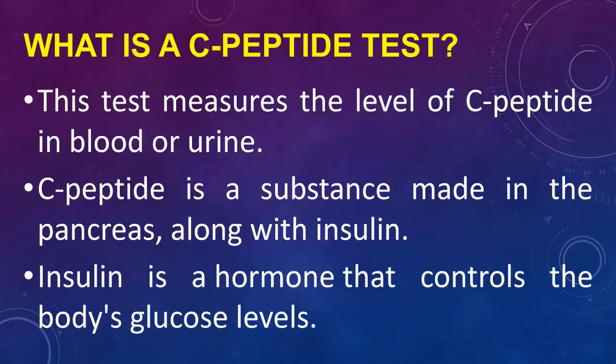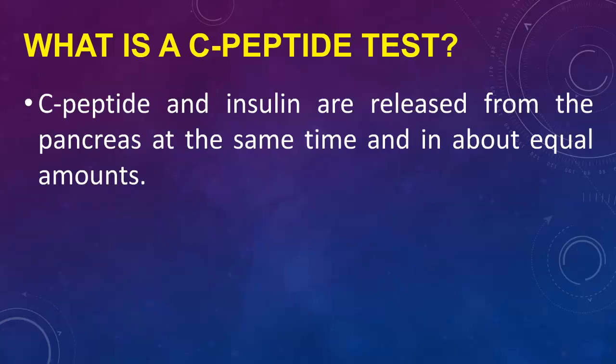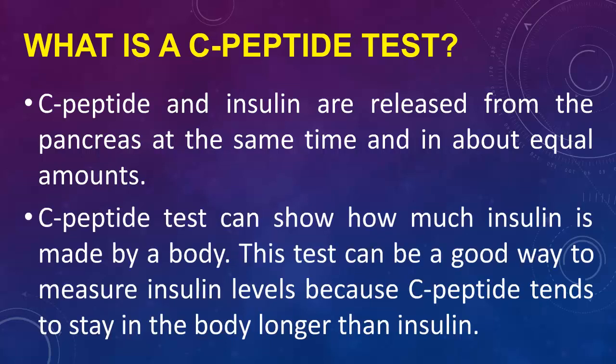Insulin is a hormone that controls the body's glucose levels. C-peptide and insulin are released from the pancreas at the same time and in about equal amounts. A C-peptide test can show how much insulin is made by the body. C-peptide tends to stay in the body longer than insulin, making it a good way to measure insulin levels.